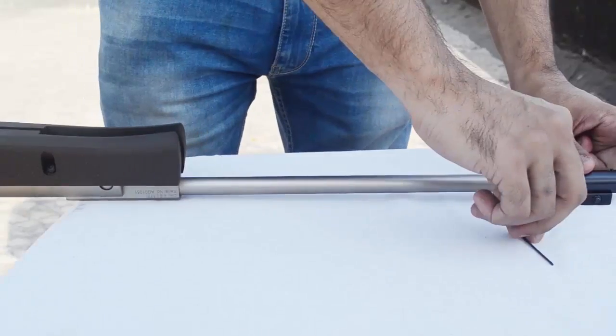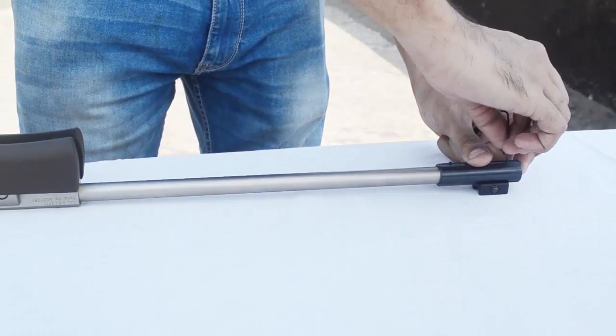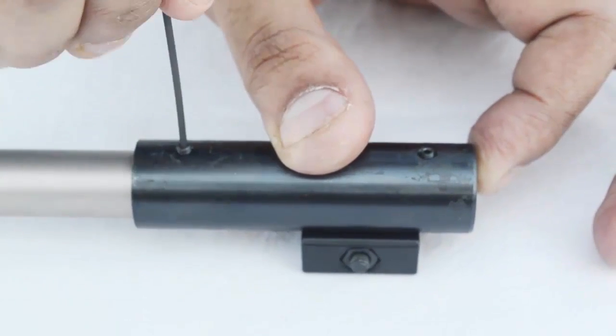Apply some pressure on the barrel or the adapter to make sure the flat of the barrel piece and the flat of the clamping element are aligned with each other. Tighten the screws on the adapter.